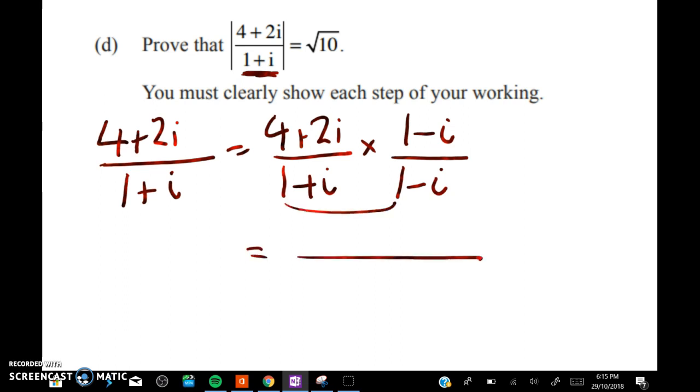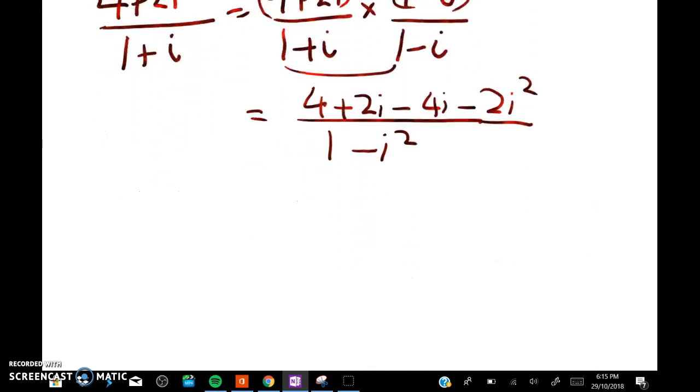So going through this we get 1 plus i minus i minus i squared, and in the numerator we get 4 plus 2i minus 4i minus 2i squared. Now don't do this in too much of a rush. Remember it is a proof question, so you want to make the reader be able to follow every step.